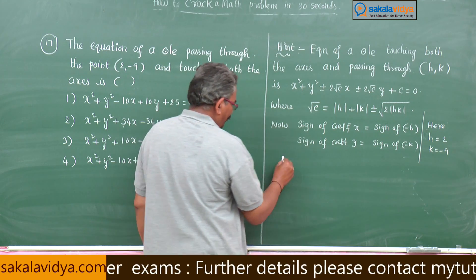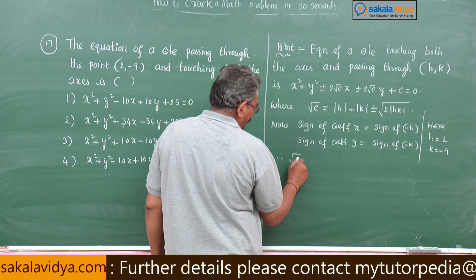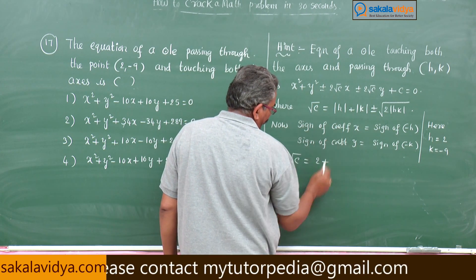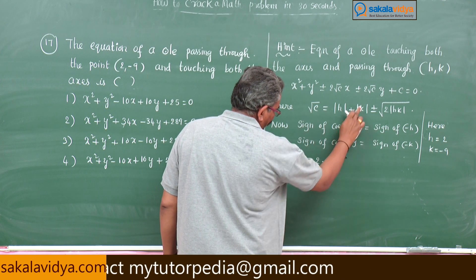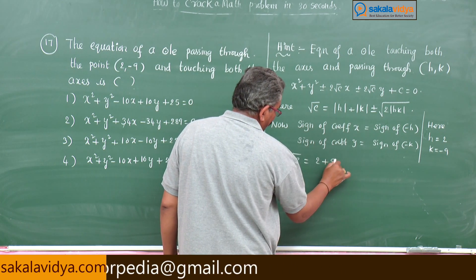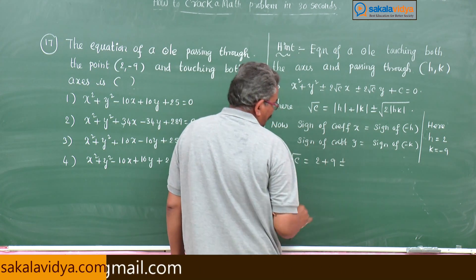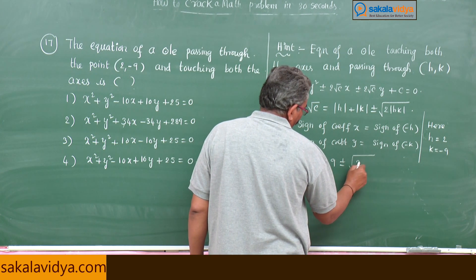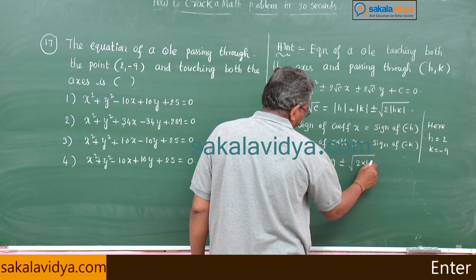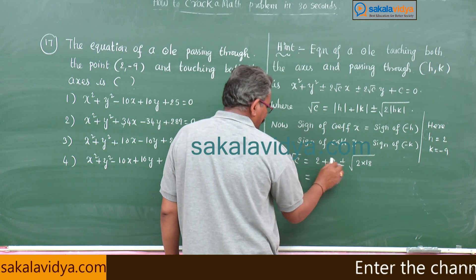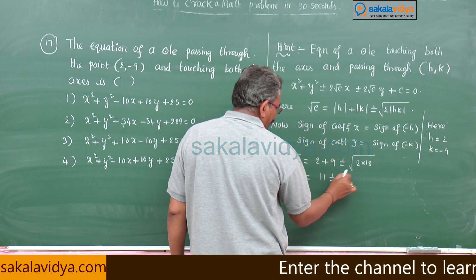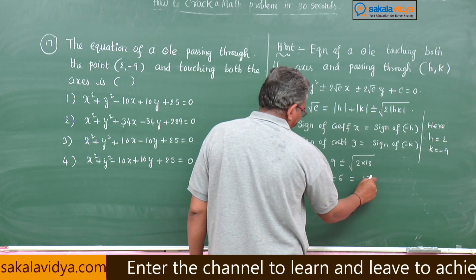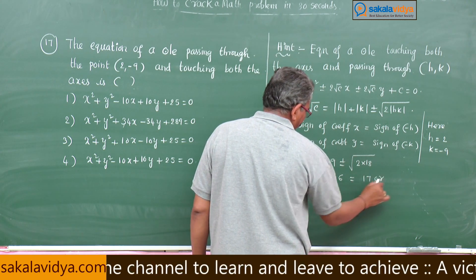Therefore √c = |h| + |k| = 2 + 9 = 11, plus or minus √(2 × 18). This means 11 ± 6, giving either 17 or 5.